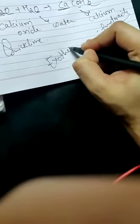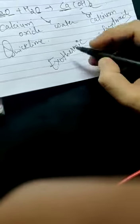When we get calcium hydroxide, that is basically a reaction which is known as exothermic reaction. What is exothermic reaction? Exothermic reaction means heat release.